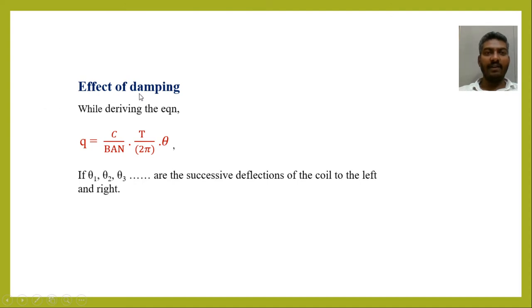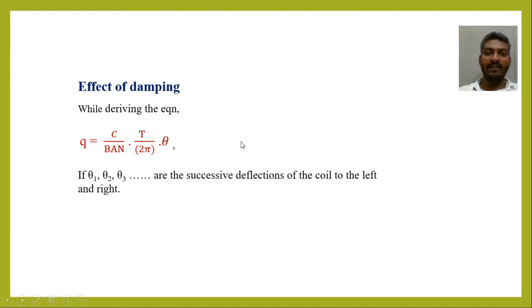Now let us see the effect of damping. While deriving the equation Q = C/BAN × T/2π × θ, it was assumed that the total kinetic energy is utilized in twisting the suspended wire. But this is not true — some part of kinetic energy is utilized to overcome damping forces such as air resistance and electromagnetic damping due to the magnetic pole pieces. Due to this damping, the amplitude of the coil decreases successively.